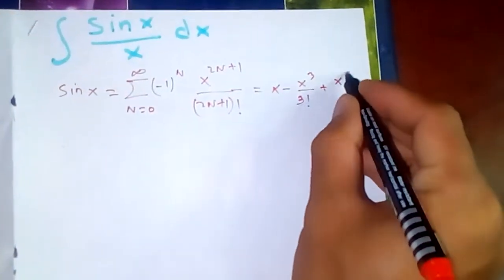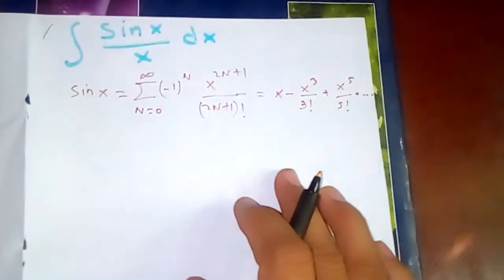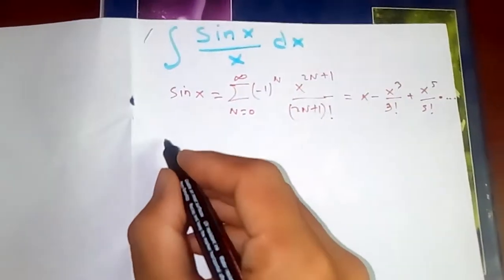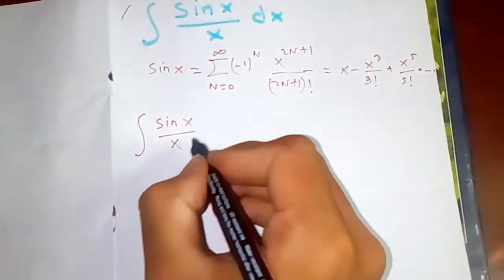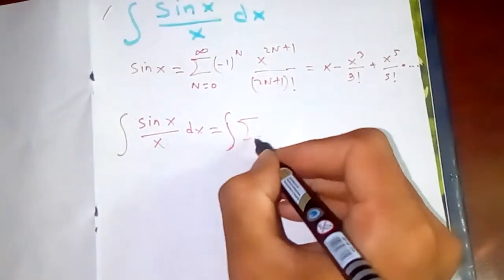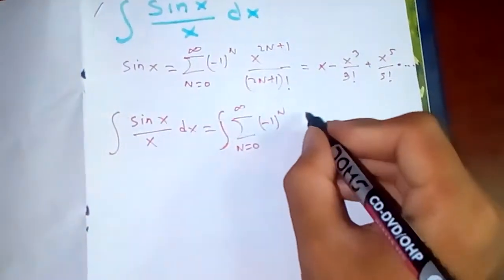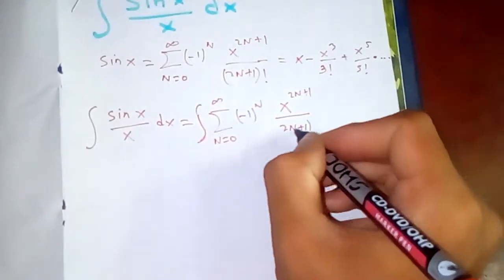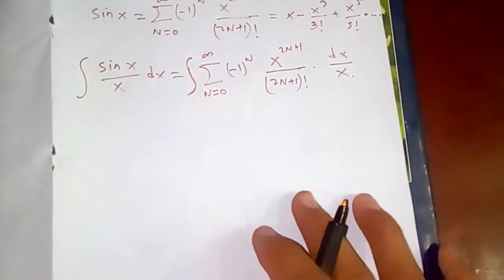Okay, so we have this. Now let's apply here. Integral of sin(x) over x dx is integral of summation from n equal to 0 to infinity of (-1)^n times x^(2n+1) over (2n+1) factorial, dx, divided by x.